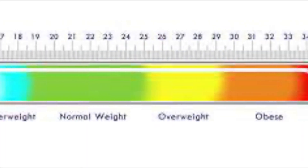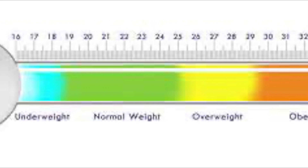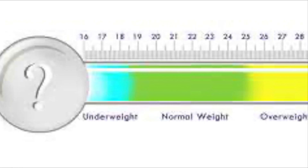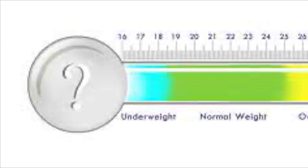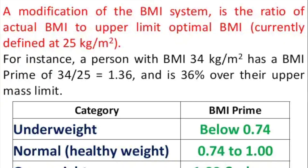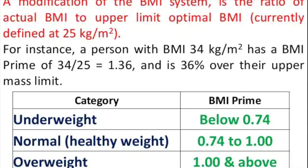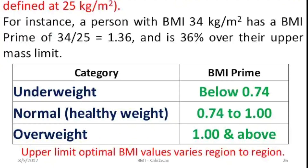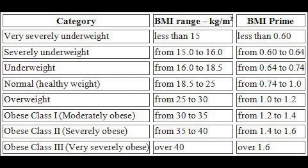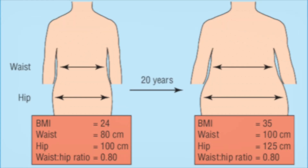BMI Prime, a modification of the BMI system, is now gaining traction. It is the ratio of actual BMI to the upper limit of optimal BMI, currently defined at 25 kg per meter squared. This means that the actual BMI is expressed as a proportion of its upper limit.